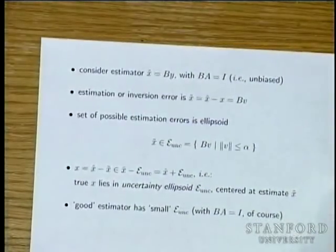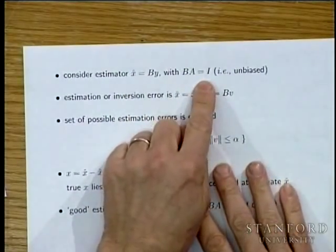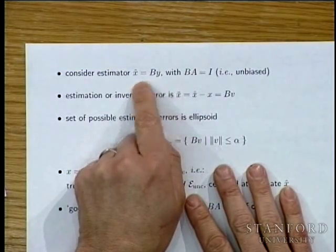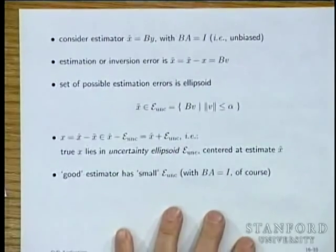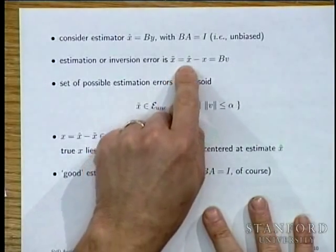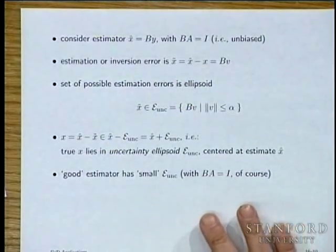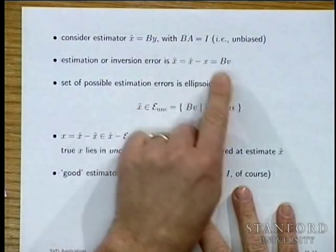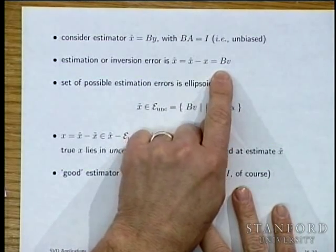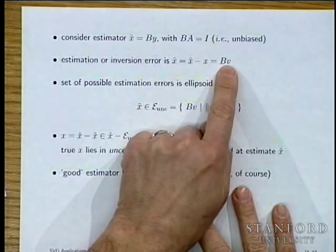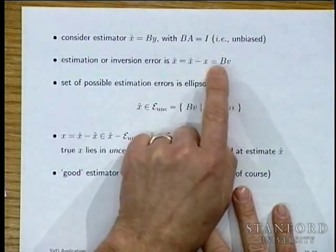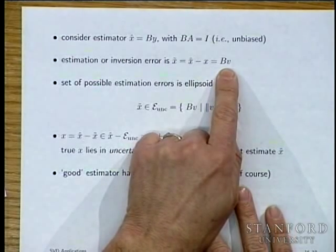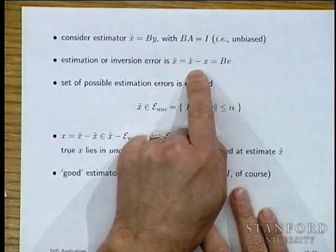Put in a linear unbiased estimator X̂ = BY, where BA = I — meaning perfect reconstruction with no noise. The estimation error is X̂ − X = BV. The key is: among left inverses of A, you want B to be small, because B is what amplifies the noise. B maps measurement noise into estimation error, so you want B small — though it can't be zero since BA = I.